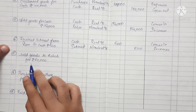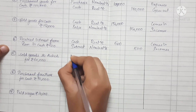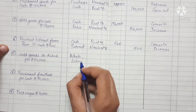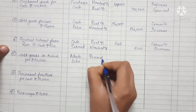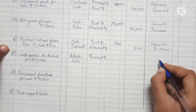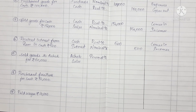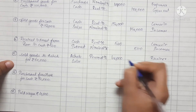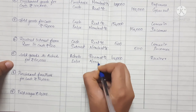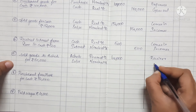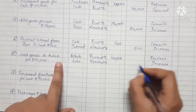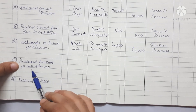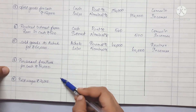Fifth transaction: Sold goods to Ashok Rs.60,000. Two accounts: Ashok and sales. Ashok is a personal account — he is the receiver — so Ashok is debited Rs.60,000. Sales is a nominal account and represents income, so sales is credited. The next transactions — purchase furniture for cash Rs.50,000 and paid wages — the answers are left in the comment box.